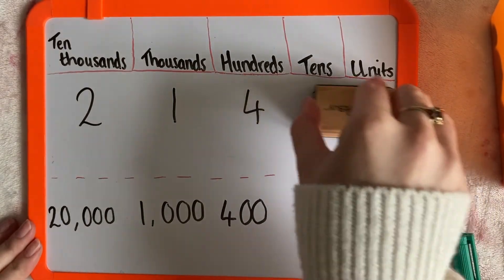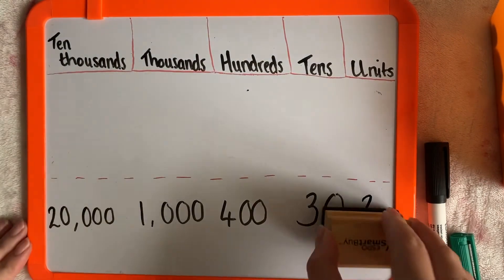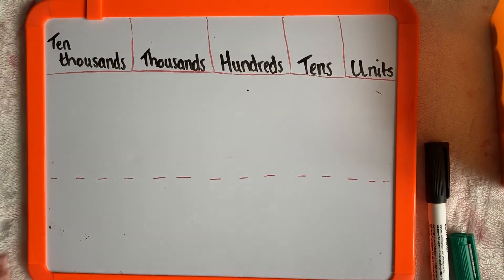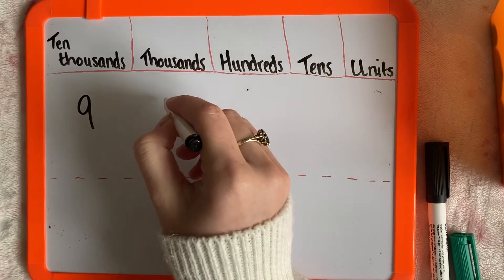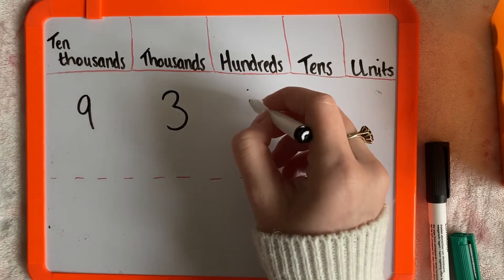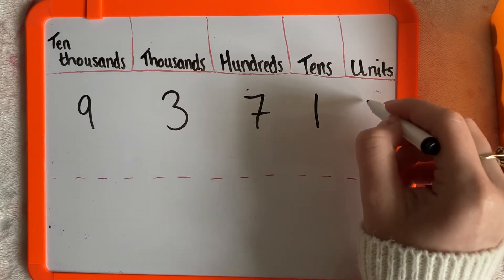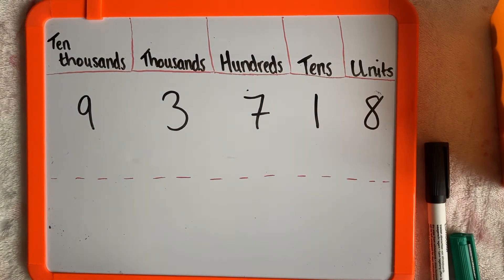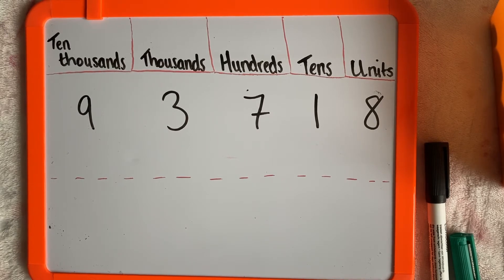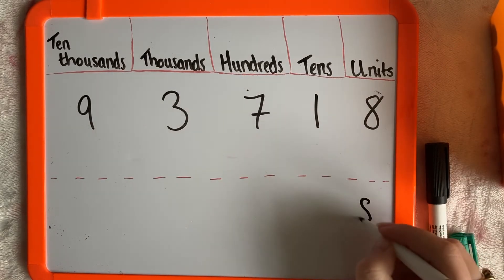Let's try another example. I'll put the number 9, 3, 7, 1, 8 — so 93,718. Take a moment, pause the video and see if you can work out the Place Value of every digit.